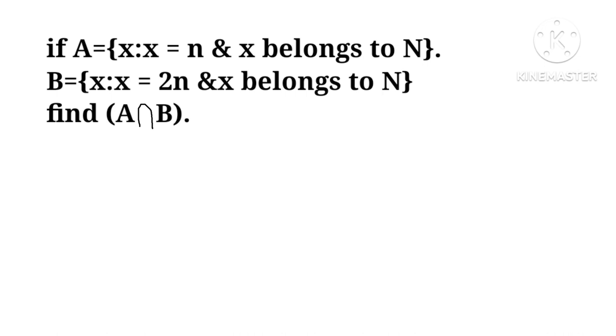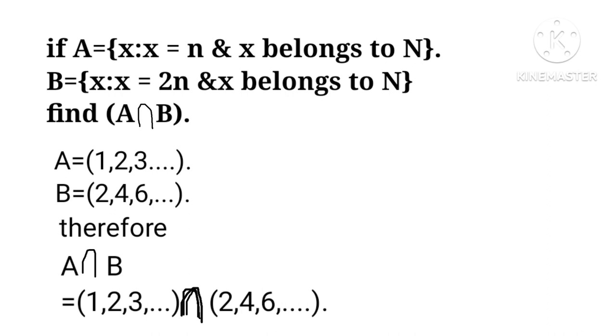Converting A and B into roster form, we get A equals 1, 2, 3, and so on, B equals 2, 4, 6, and so on. Therefore, A intersection B equals 1, 2, 3 intersection 2, 4, 6, equals 2, 4, 6.